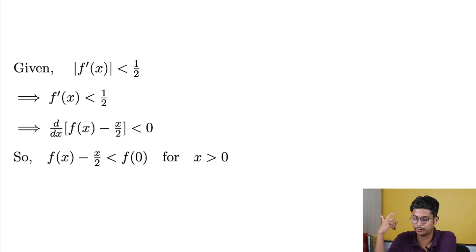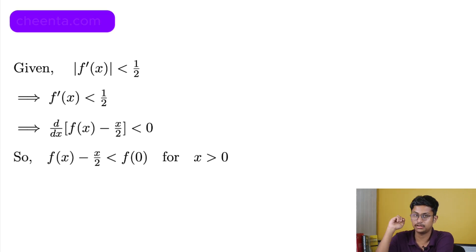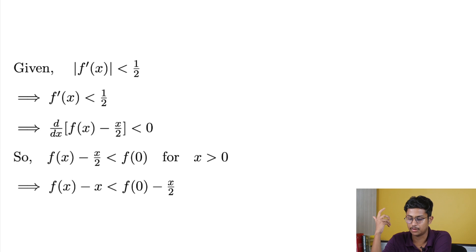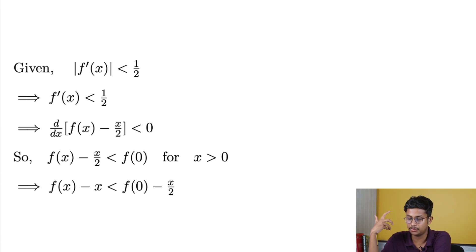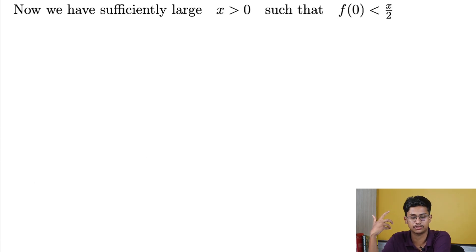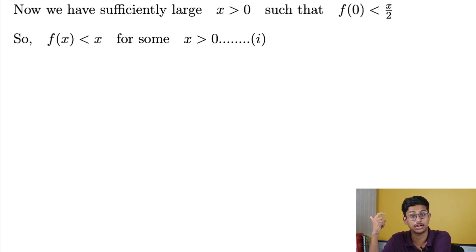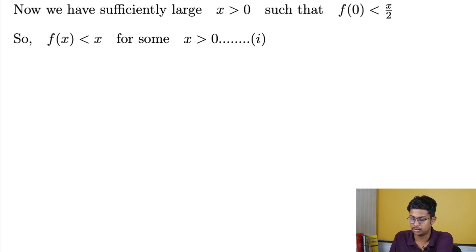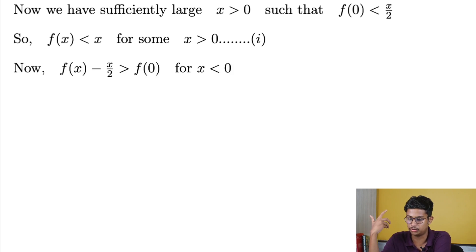Since f(x) - x/2 is strictly decreasing, f(x) - x/2 < f(0) for x > 0. Then f(x) - x < f(0) - x/2, subtracting x/2 from both sides. For sufficiently large x > 0, f(0) < x/2, so we get f(x) < x for some x > 0.